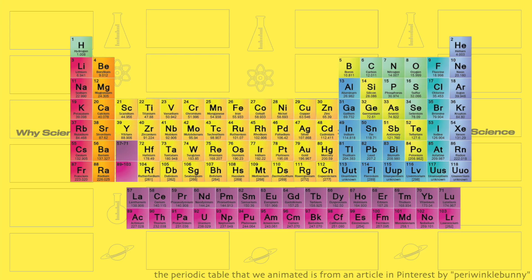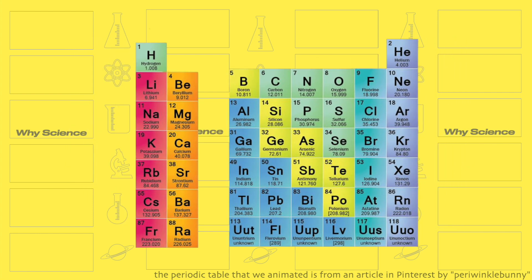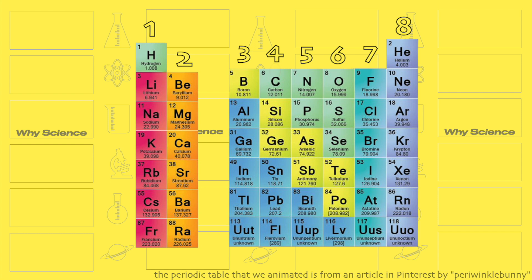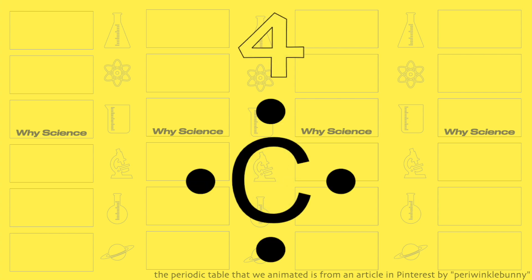The first step is to identify how many valence electrons an atom has. The easiest way to do it is by knowing the group of the element from your periodic table, but we have to disregard the transition metals for now. We count from 1 to 8 from the left, and the number assigned to that group is the total number of valence electrons for all atoms under it. For example, carbon is under number 4, so carbon has a total of 4 valence electrons.